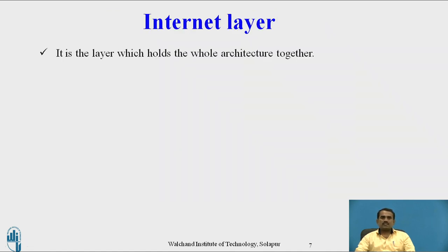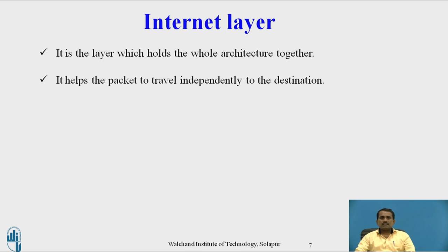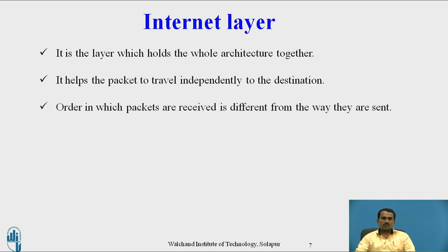The next layer is the Internet Layer. It contains protocols used for different purposes and is the layer which holds the whole architecture together. The architecture contains a number of layers and protocols that interface with each other before transmitting data from upper layer to lower layer. It helps packets travel independently to the destination. The order in which packets are received may differ from the way they were sent. IP, the Internet Protocol, is used in this layer for transmitting packets or data.